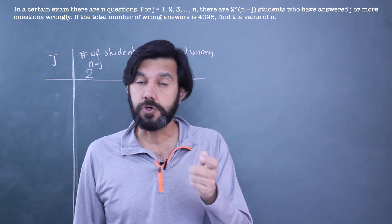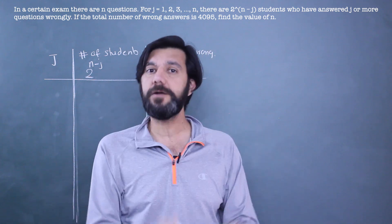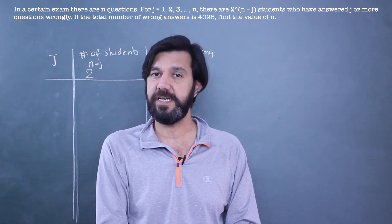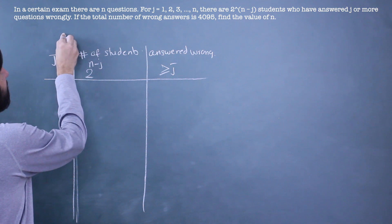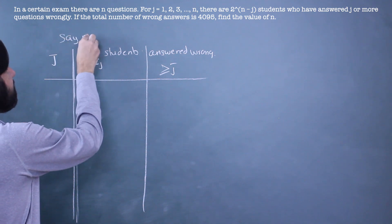Taking smaller values like 2, 3 or so on, you might not see the pattern. So I will use a little larger value. I will say, let's say n is equal to 5.